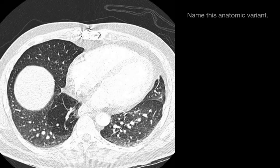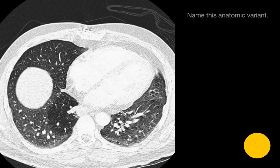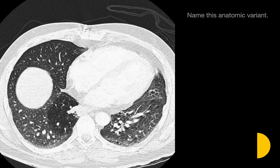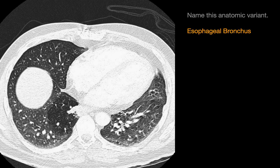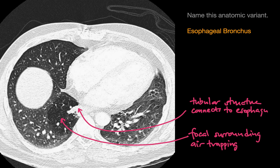The imaging finding here is in the medial right lower lobe. We have a tubular opacity that seems like it's arising from the lower mediastinum, specifically the esophagus, going into the medial right lower lobe. It's associated with a region of blacker-appearing air-trapped lung. This anatomic variant is an esophageal bronchus — a fluid-filled bronchus connecting to the esophagus, with some air-trapping in the associated lung.